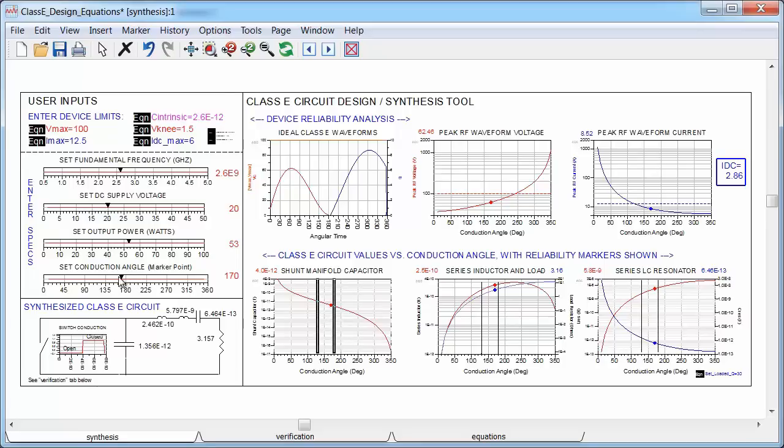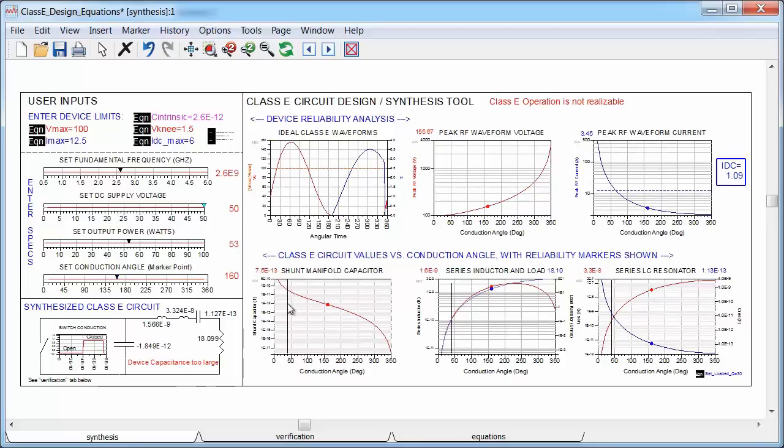If the angle is outside of the markers, the device limitations are being exceeded. So I want the conduction angle to be between these vertical reliability markers. And sometimes it's not even possible to realize class E operation with any conduction angle, and if that happens, the markers collapse, and a warning message pops up.